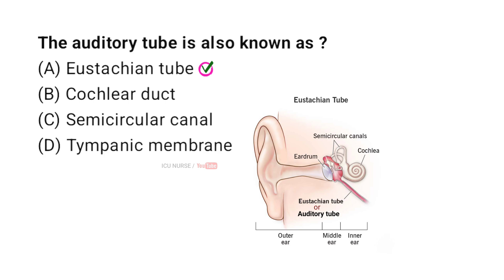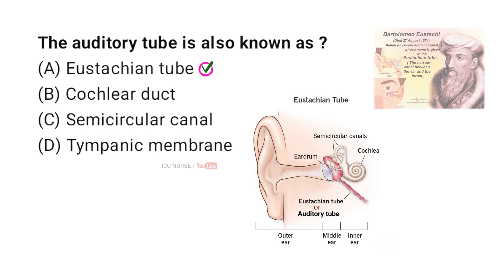The auditory tube is also known as the Eustachian tube because it was named after Bartolomeo Eustachy, an Italian anatomist who first described it. This tube connects the middle ear to the throat and helps regulate air pressure in the ear. It plays an important role in maintaining balance and protecting the eardrum from pressure changes.